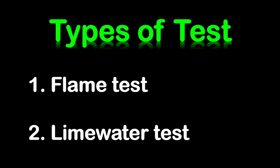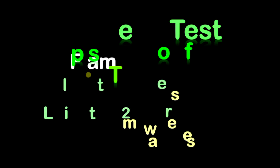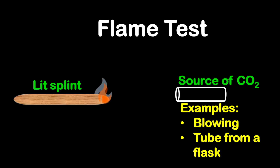Now let's go into the flame test first. For the flame test, you notice on the left of your screen there is a lit splint, and on the right of your screen there is a source of carbon dioxide. Now this source of carbon dioxide could be blowing, which includes exhaled air, or you could simply connect a tube from a flask which will contain a reaction that is producing a gas.